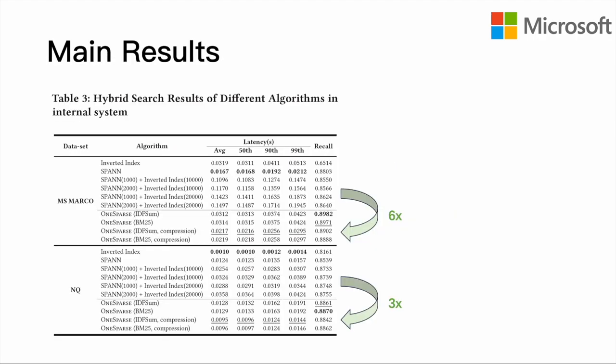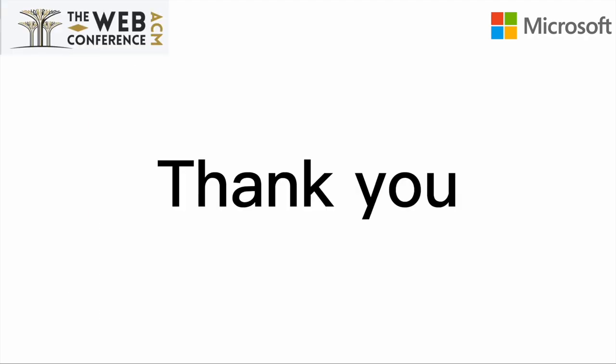We compared hybrid search of OneSparse and isolated methods in two datasets. The results show that OneSparse is much faster than isolated methods while maintaining similar recall. Besides, OneSparse has been successfully deployed in Microsoft Bing search for more than two years and also achieved better search performance. We hope that OneSparse enables more retrieval systems to operate on hybrid datasets much more practically.